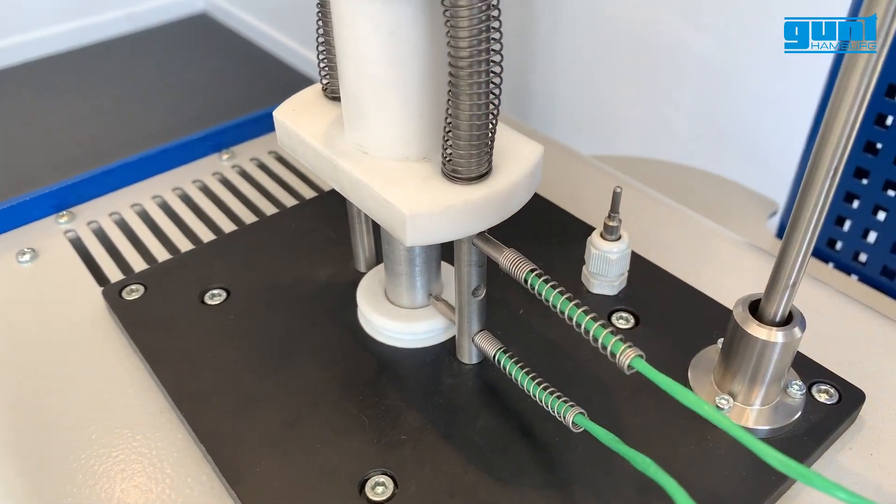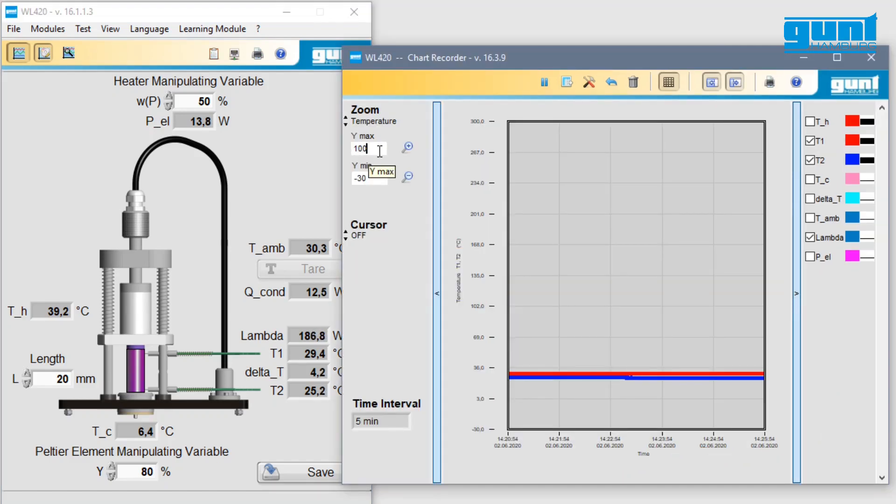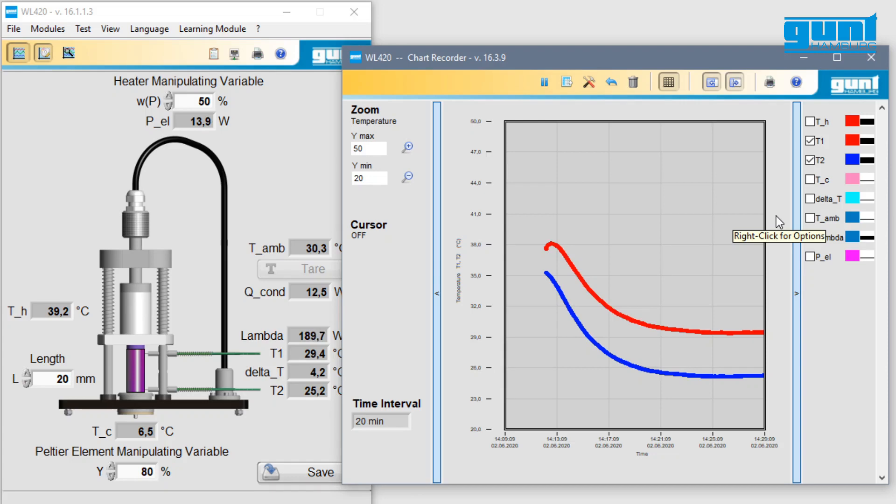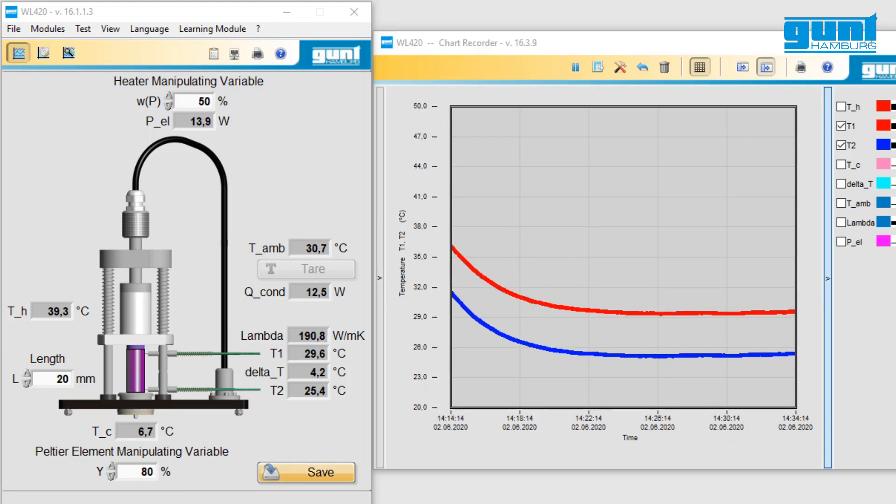Let's start measuring. After setting the appropriate values for heating and cooling, you can observe on the chart recorder how the values for the measured temperatures change. You can also see in the system overview these temperatures as numerical values together with the calculated heat conductivity lambda. Make sure you select the correct specimen length, otherwise the results will be incorrect. After a while, a steady state is reached. As a tip for teachers, you can deselect the display of the value for lambda to task the students with calculating it themselves. Just like in the old days.